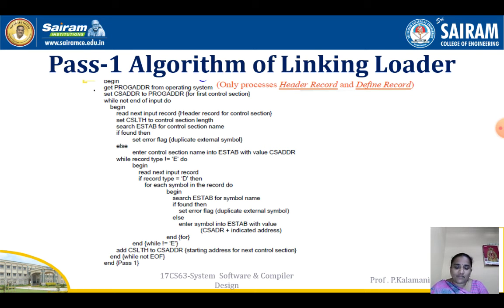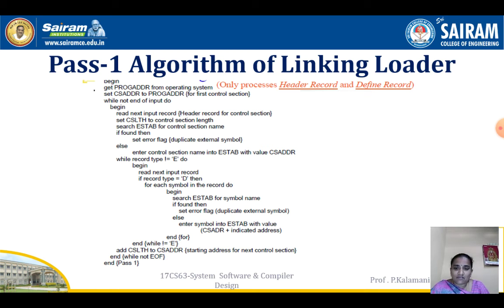While not end of input, the following operations are performed: read the next input record. If the record is a header record for a control section, set the control section length, then search the external symbol table for that control section name. If it is already there, that indicates a duplication and an error flag is set. If it is not there, the control section name is entered into the symbol table with value equal to the CS address.